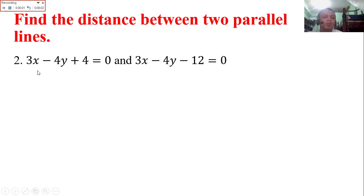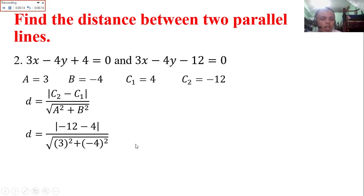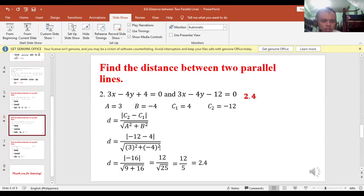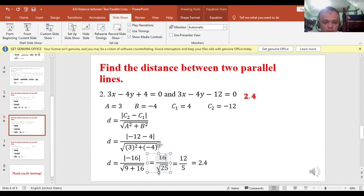Next, 3x minus 4y plus 4 equal to 0, and 3x minus 4y minus 12 equal to 0. Your A is 3, your B is negative 4, your C sub 1 is 4, your C sub 2 is negative 12. Just substitute. You have negative 12 minus 4, which equals negative 16. 3 squared is 9, negative 4 squared is 16. Absolute value of negative 16. That is not 12, wait. Okay, 16.